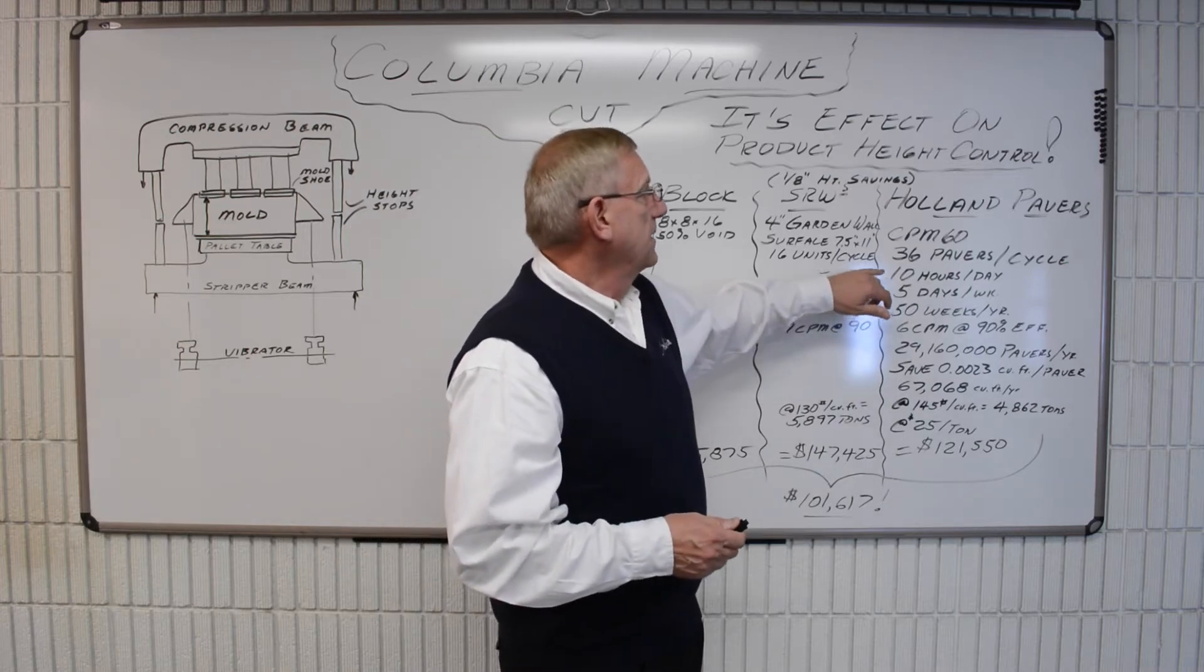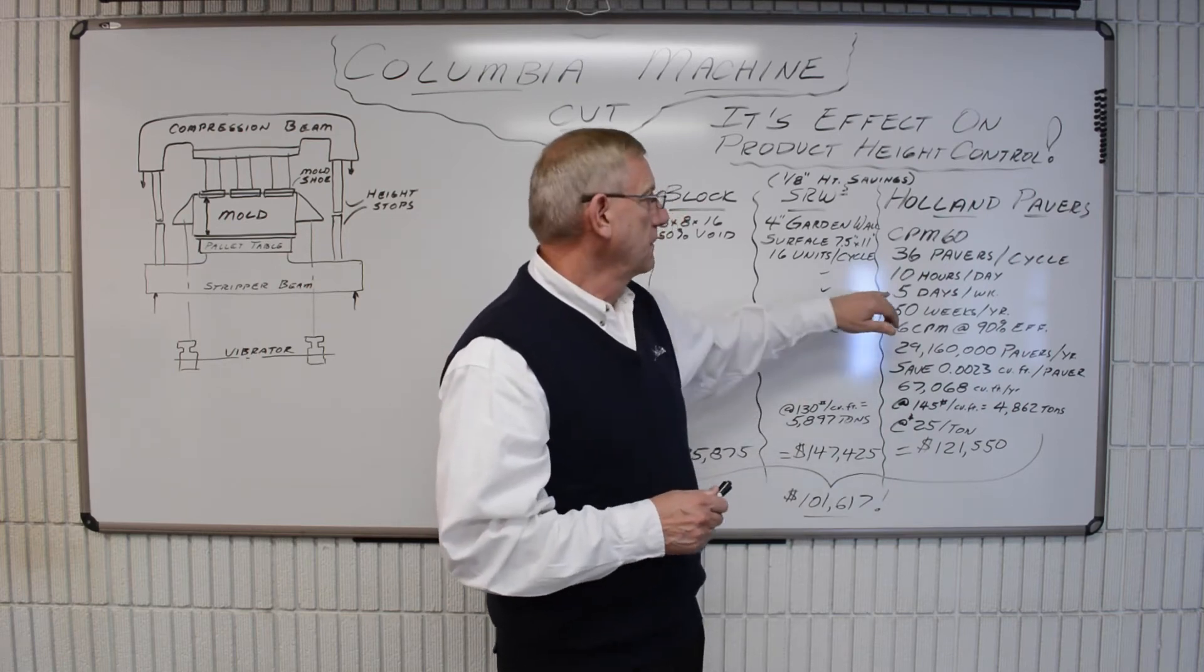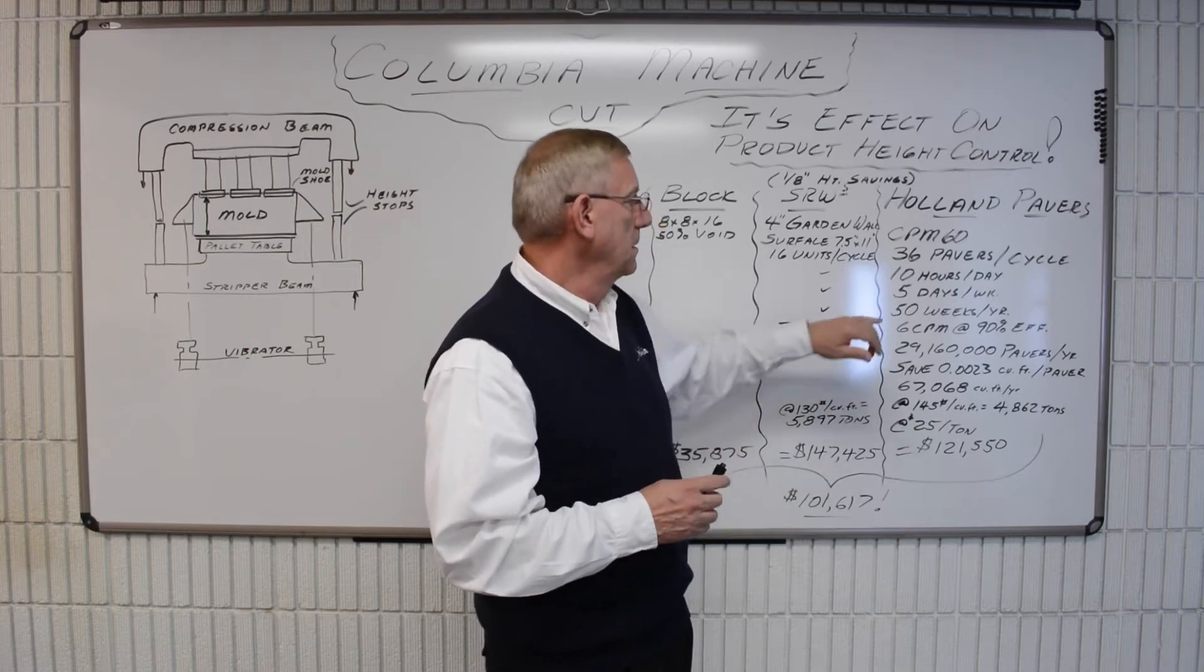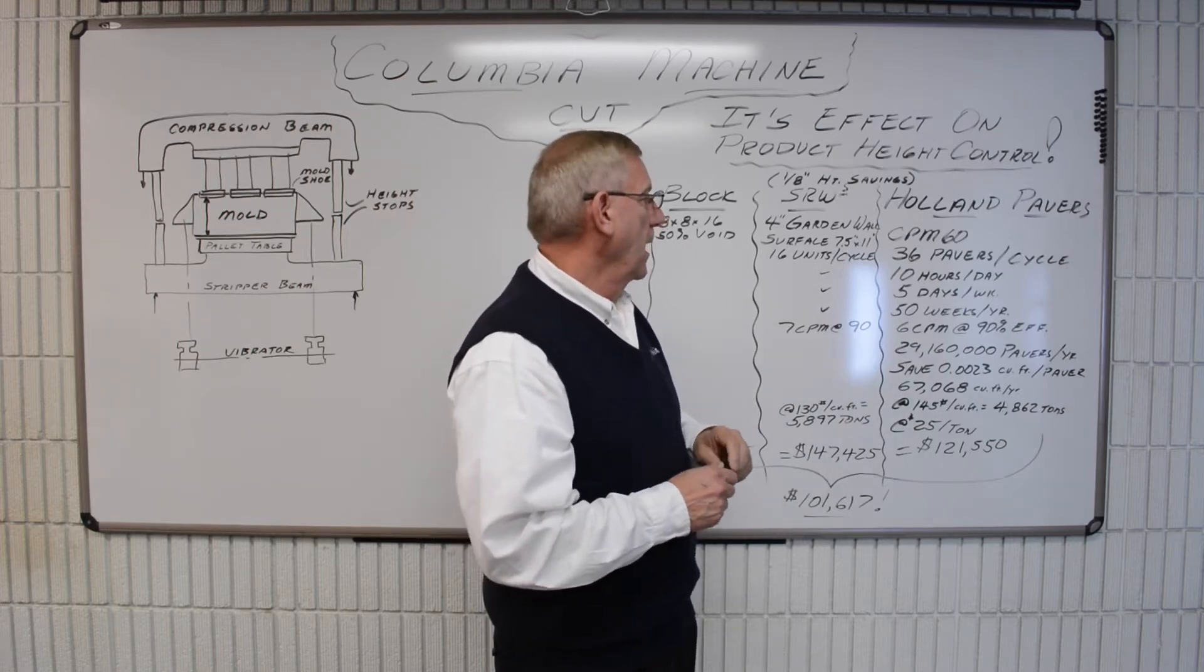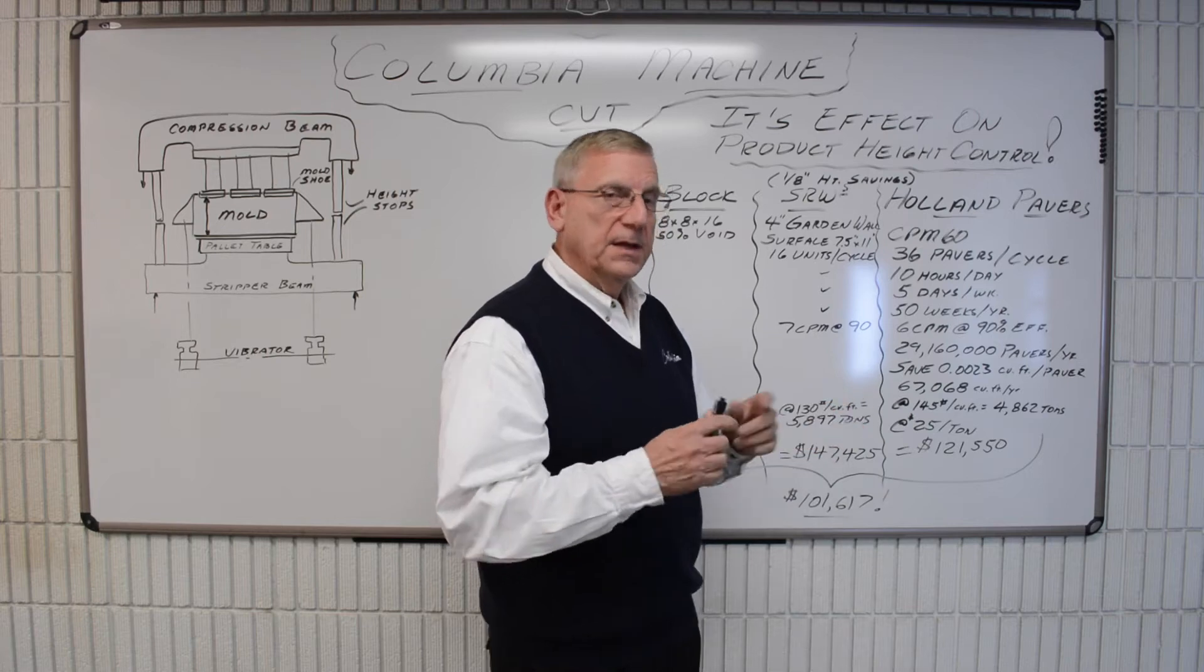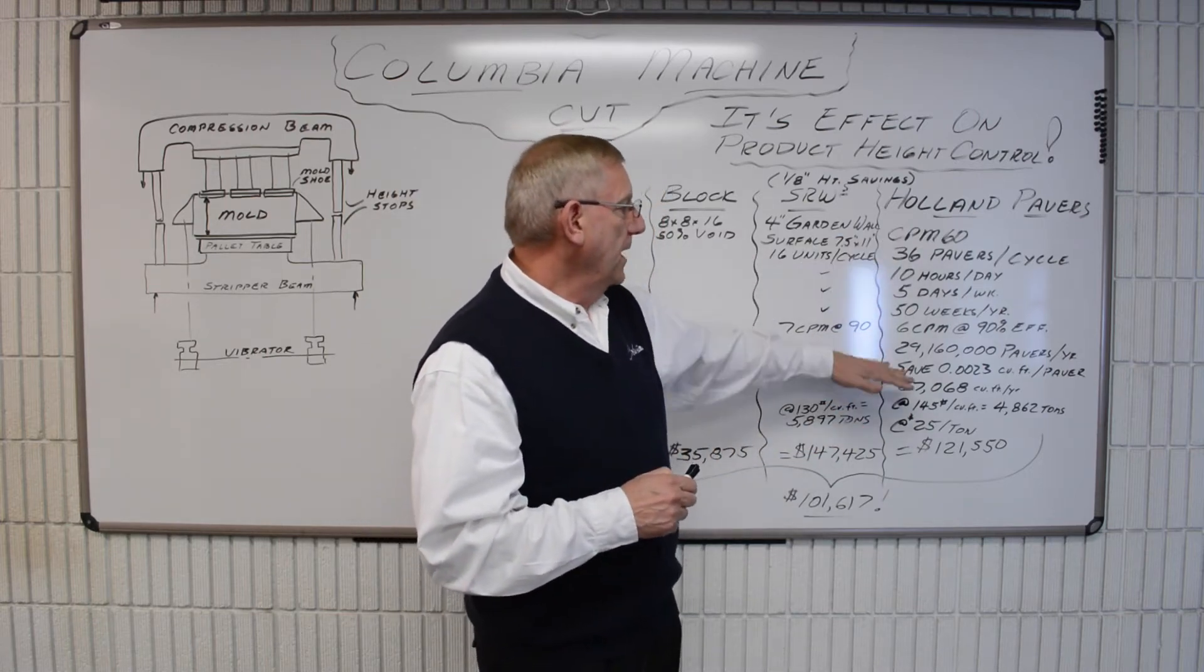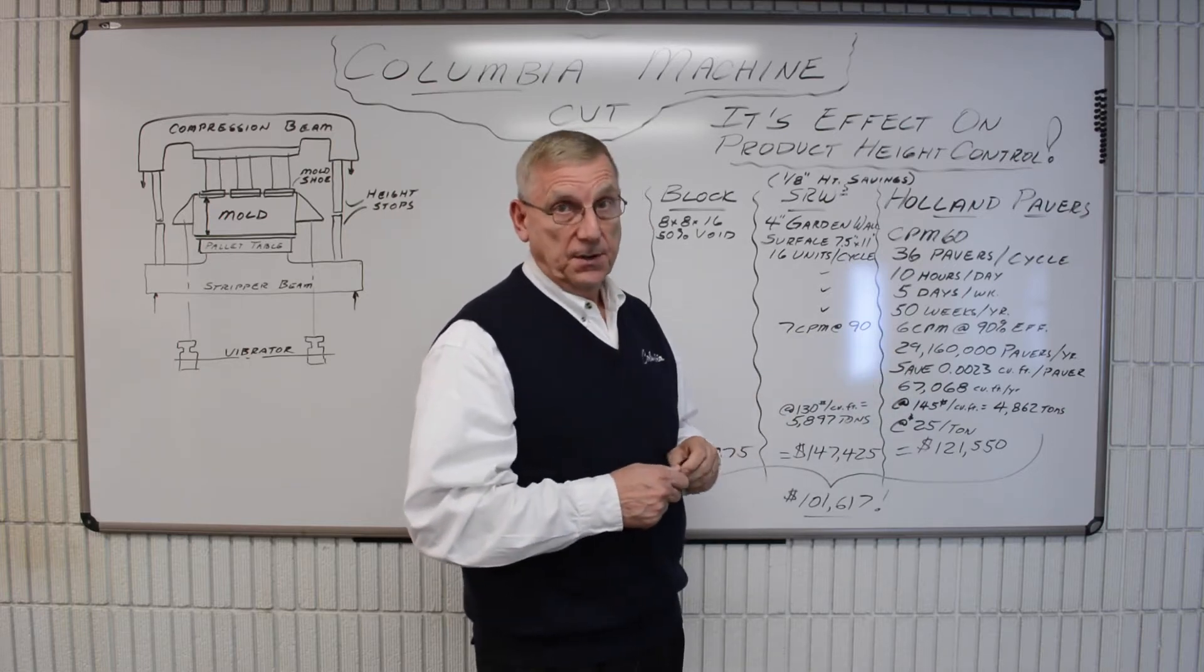Say the plant runs a single shift, 10 hours a day, and say we produce pavers 5 days a week and 50 weeks in the year. And say we run that plant at a modest cycle rate of 6 cycles per minute and 90% efficiency. At that rate, you would produce 29,160,000 pavers in a year.